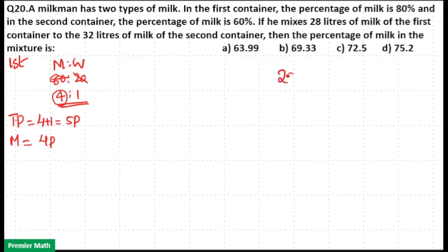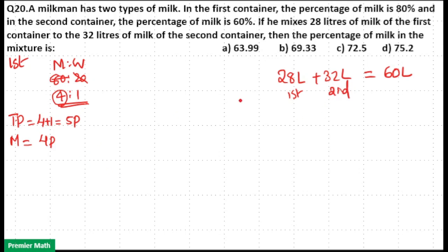The milkman has taken 28 liters from the first container and 32 liters from the second container, giving a total of 60 liters in the final mixture.